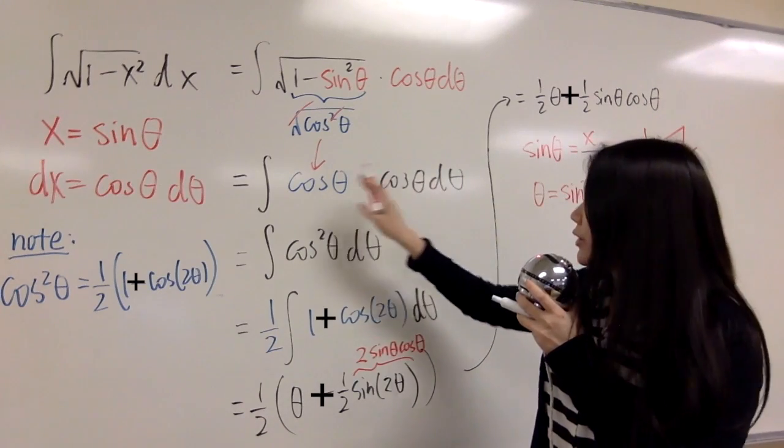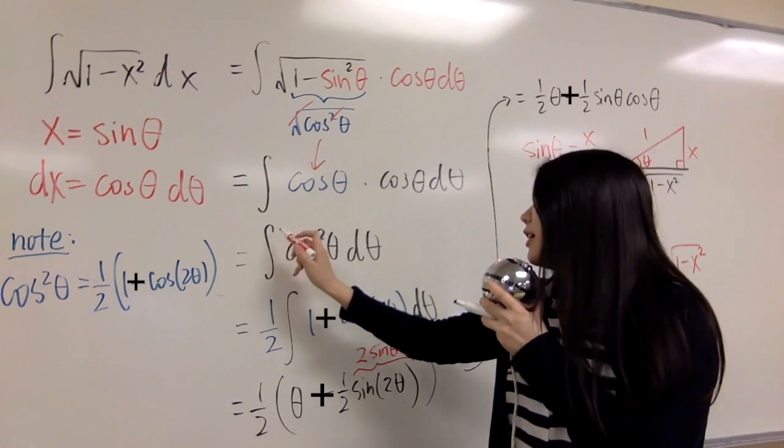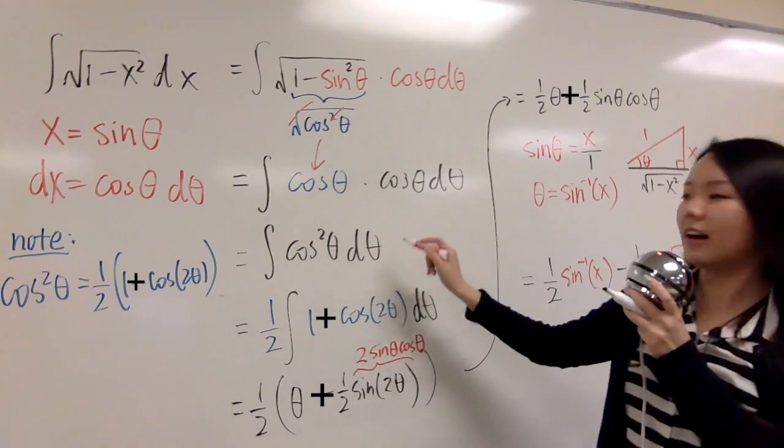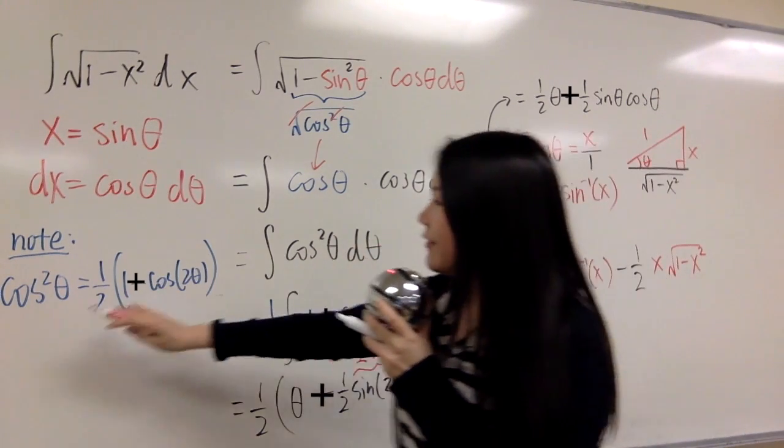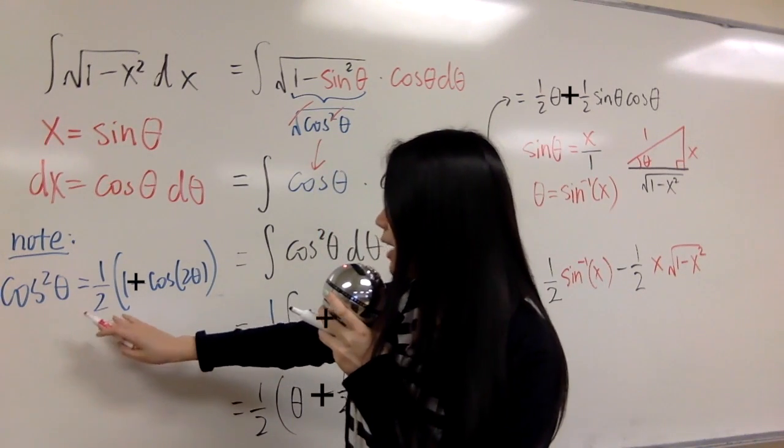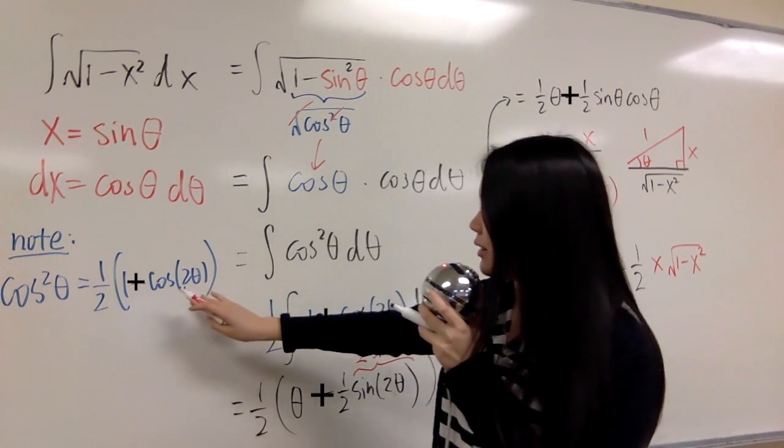So now when you simplify it, that's integrate of cosine squared theta d theta, and we have a formula here, trig identity, cosine squared theta equals to a half, 1 plus cosine 2 theta.